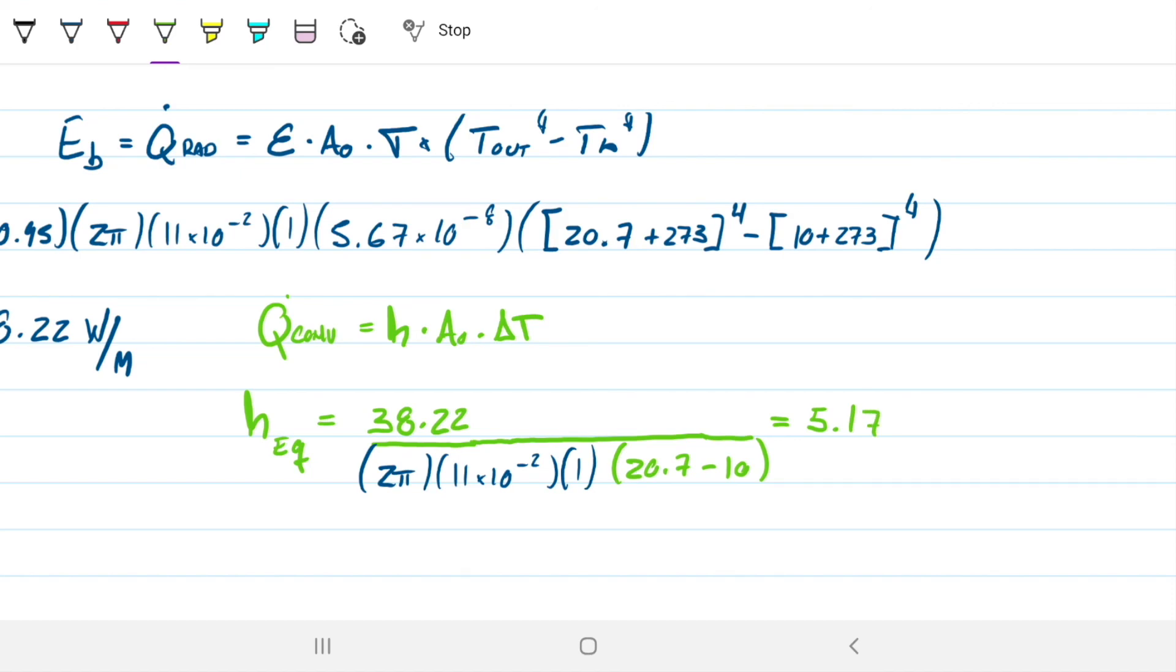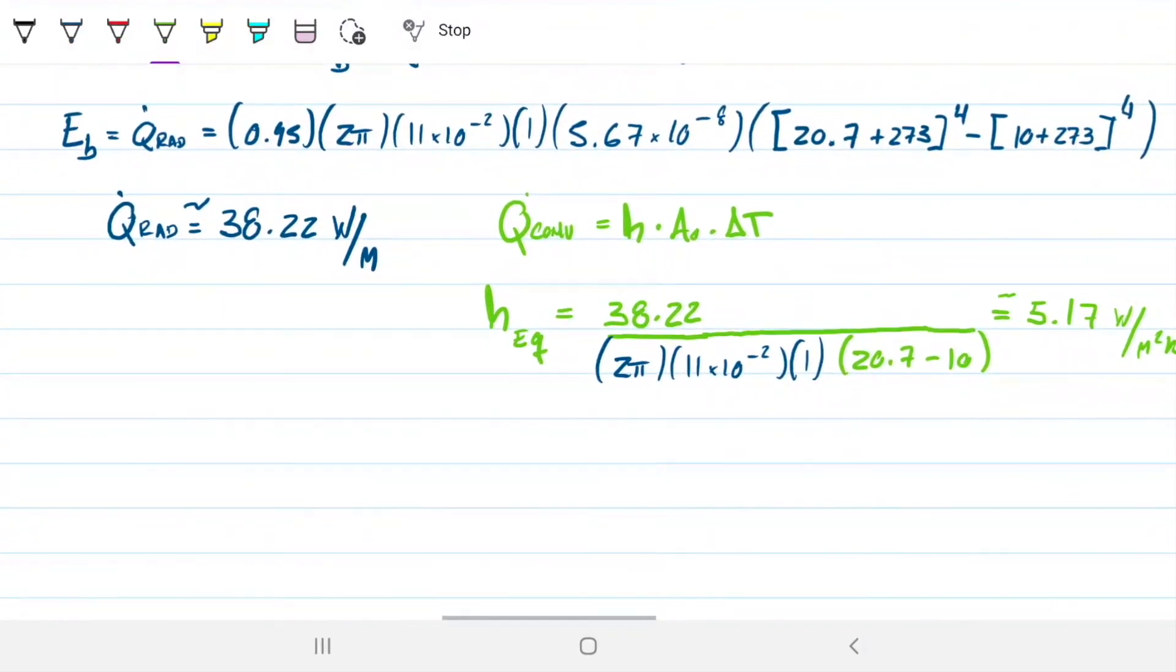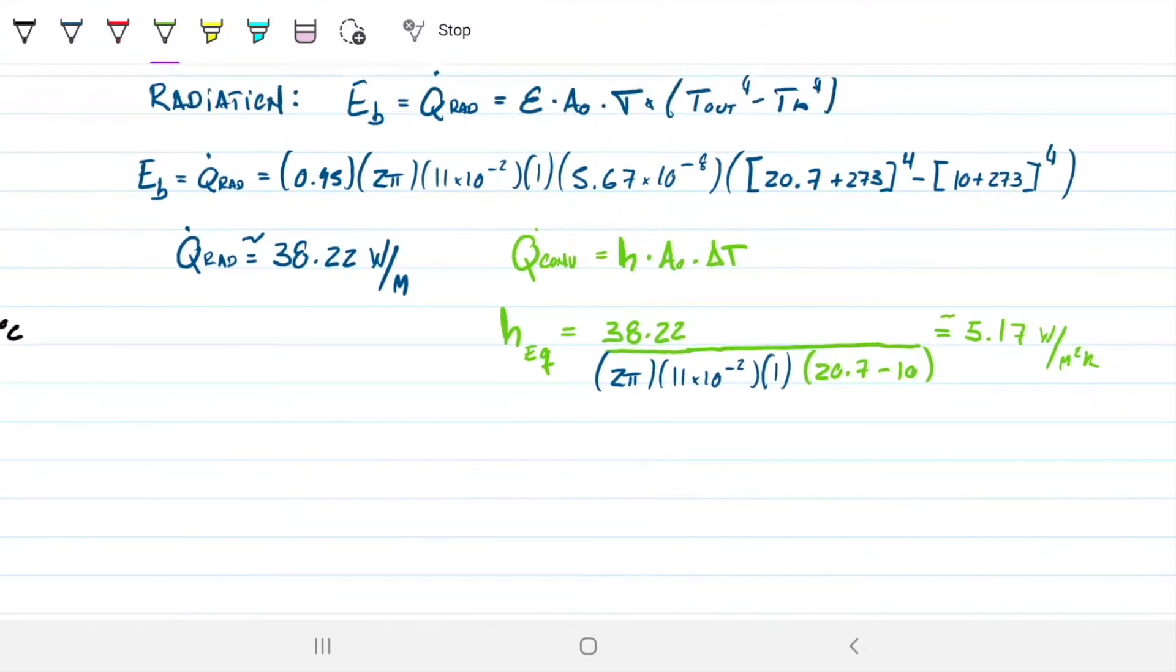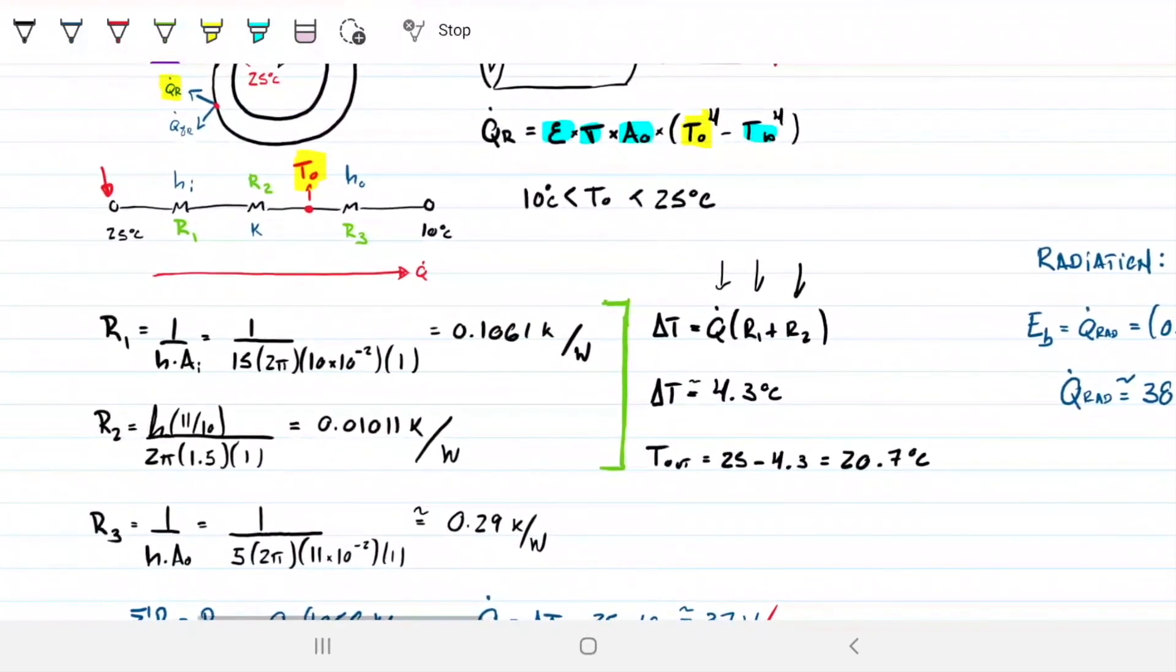So it's 5.16, 17, and I'm just going to say 17. Good enough. And then units will be watts per meter squared Kelvin as always. Okay, so what can I do now? Well, I can go back now. I can grab this. Okay, so I'm going to go back now.